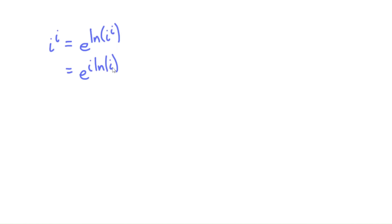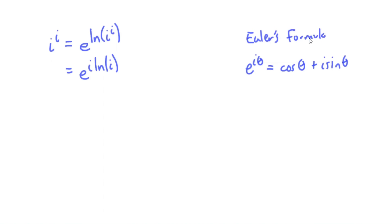The question is, what is e to the i times natural log of i? If you're familiar with Euler's formula — e to the i theta equals cosine theta plus i sine theta — you may be tempted to use it here, where theta is natural log of i. But then we'd need cosine of natural log of i and sine of natural log of i, and we get stuck. So we're actually not going to use Euler's formula at this point.